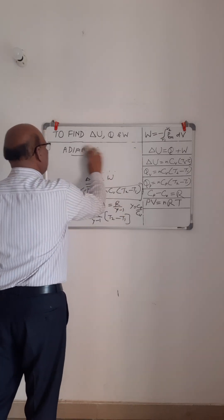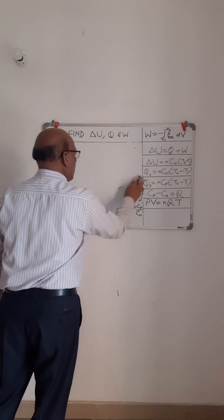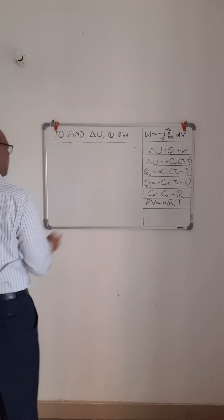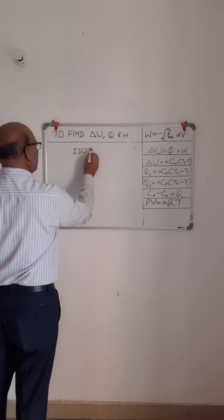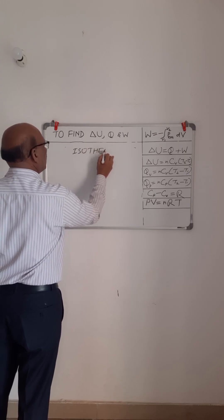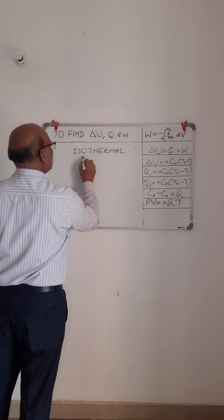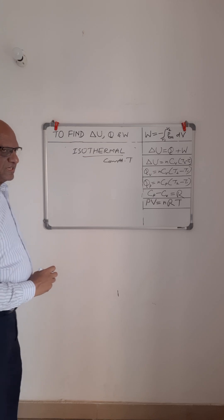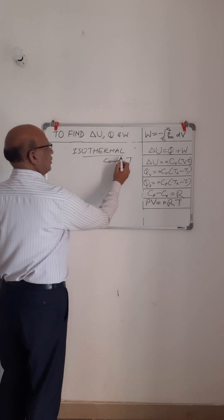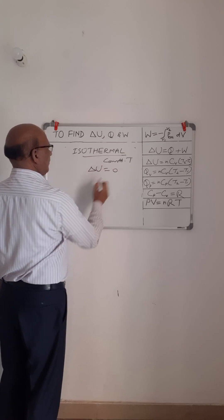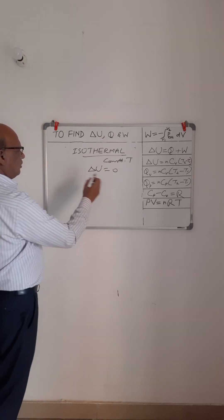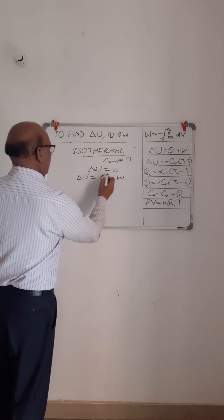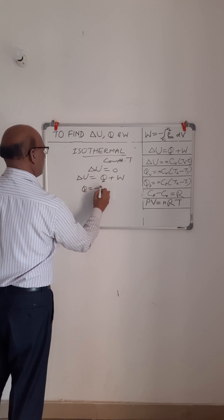Now the last process: the isothermal process, where temperature remains constant. Since the internal energy of an ideal gas is a function of temperature only, delta U equals zero for an isothermal process. Applying the first law — delta U equals Q plus W — with delta U equals zero, we get Q equals minus W.